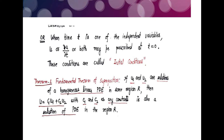To solve boundary value problems we use the fundamental theorem of superposition, which states that if u₁ and u₂ are solutions of a homogeneous linear PDE in some region R, then u = c₁u₁ + c₂u₂ — their linear combination with arbitrary constants c₁ and c₂ — is also a solution of that PDE in R.